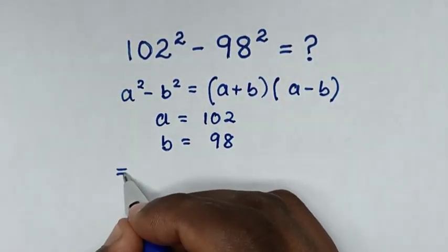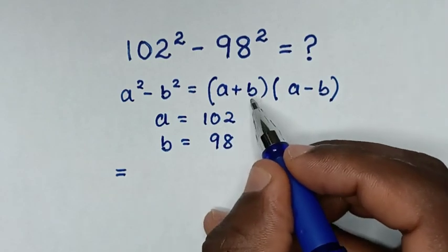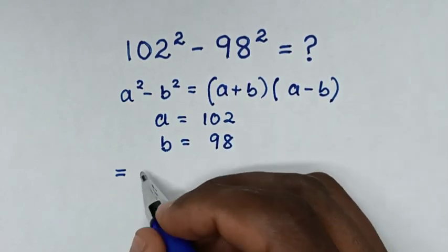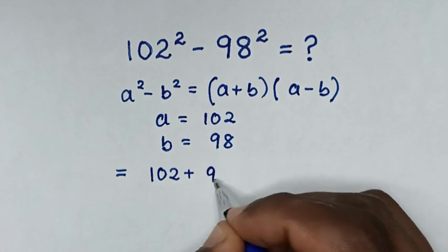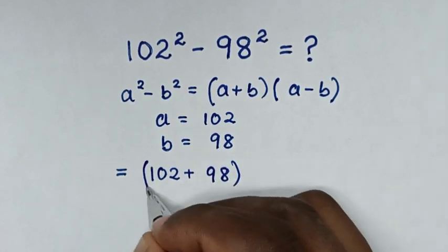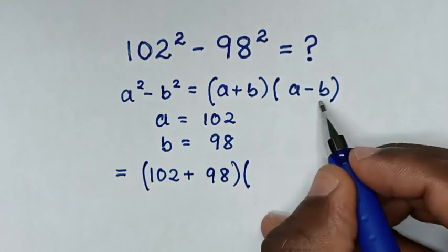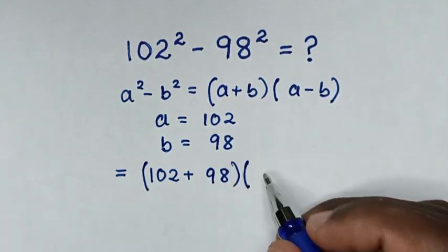Then it will be equal to a plus b is 102 plus 98, then bracket times a minus b is 102 minus 98.